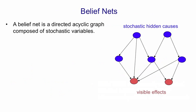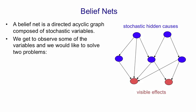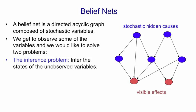A belief net is a directed acyclic graph composed of stochastic variables, and here's a picture of one. In general, you might observe any of the variables. I'm going to restrict myself to nets in which you only observe the leaf nodes. So we imagine there are unobserved hidden causes — they may be layered — and they eventually give rise to some observed effects. Once we observe some variables, there are two problems we'd like to solve. The first is the inference problem: to infer the states of the unobserved variables. We can't infer them with certainty, so what we're after is probability distributions over unobserved variables. If the unobserved variables are not independent of one another given the observed variables, those probability distributions are likely to be big cumbersome things with an exponential number of terms.